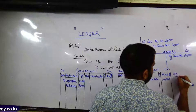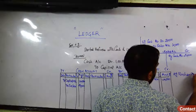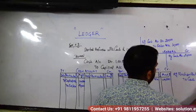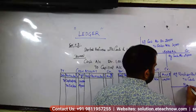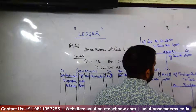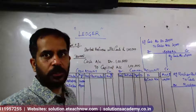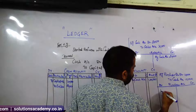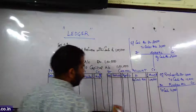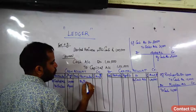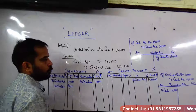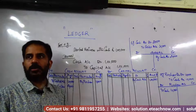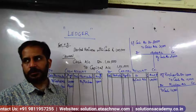One more example: Purchases account debit, To Cash account — 10,000. For the Purchase account, you post the debit entry with the name 'Cash.' For Cash account, the credit side will show the name 'Purchases.' The cash account is credited and the purchases account is debited.